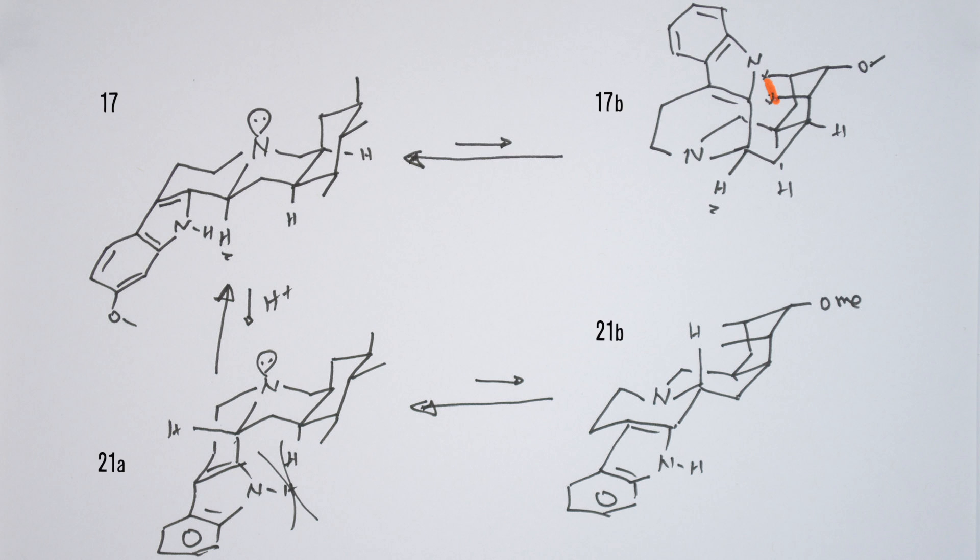Woodward saw that if he could lock the hydroxyl and carboxyl functions together forming 17b, that under acidic conditions the equilibrium would favor 21b. Breaking the orange bond in 21b would give reserpine 21a, which is stable so long as it's not treated with acid.